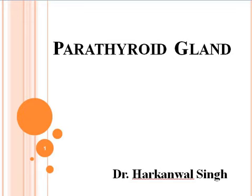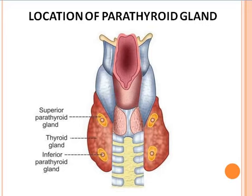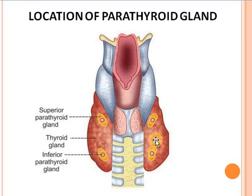Hello students, I am Dr. Harkabalsingh. Today we are going to study the structure and functions of the parathyroid gland. First of all, we will discuss the location of the parathyroid gland. Parathyroid glands are situated in the back of the thyroid gland. These are four small glands, present two on each side of the thyroid gland.